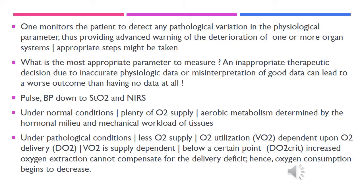Below a certain critical point of delivery of oxygen, also called DO2 critical, increased oxygen extraction will never be able to compensate for the deficit in delivery. Therefore oxygen consumption begins to decrease because of various factors — poor perfusion, anaerobic metabolism, acidosis, and many other things. In the end, there could be oxygen debt, wherein upon re-perfusion and re-supply of oxygen, the consumption of oxygen goes way beyond the actual supply.